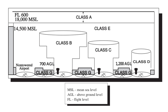Airspace is the portion of the atmosphere controlled by a country above its territory, including its territorial waters, or more generally, any specific three-dimensional portion of the atmosphere. It is not the same as aerospace, which is the general term for Earth's atmosphere and the outer space in its vicinity. Within the United States, controlled airspace exists where air traffic control has some form of positive executive control over aircraft flying in that airspace; however, air traffic control does not necessarily control traffic operating under visual flight rules. Airspace may be further subdivided into a variety of areas and zones, including those where there are restrictions or complete prohibition of flying activities.